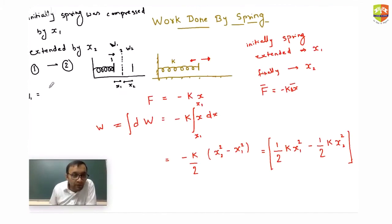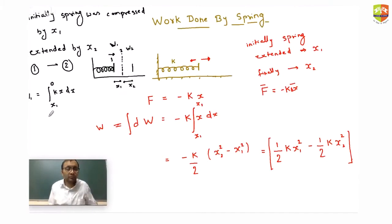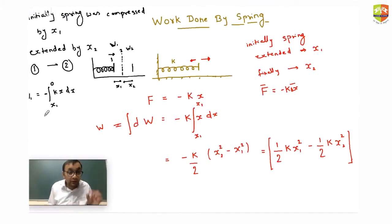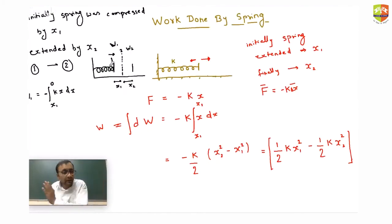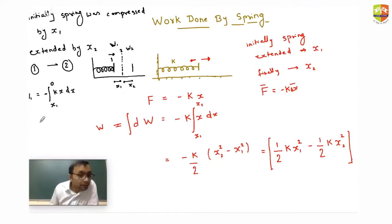For W1, work done is the integral of kx dx with limits from x1 to 0. The net result comes out positive because the spring force and displacement are both on the same side. This gives W1 equals (1/2)kx1².